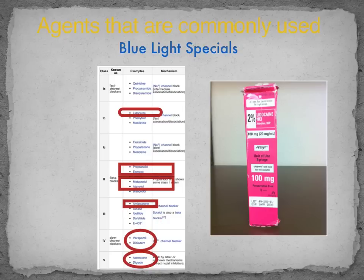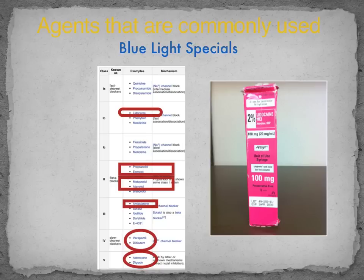Amiodarone is used for life-threatening dysrhythmias. For dosing: lidocaine is 1 to 1.5 milligrams per kilogram IV push, followed by an infusion at 2 to 4 milligrams per minute. Amiodarone in cardiac arrest is 300 milligrams slow IV push; if the patient has a pulse, 150 milligrams IV push, then a drip at 1 milligram per minute for several hours, followed by half a milligram per minute — all over a 24-hour period. These will be covered in more detail in ACLS and PALS.